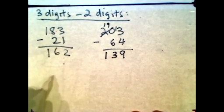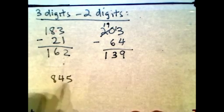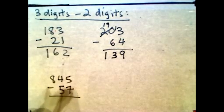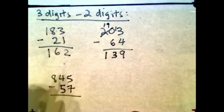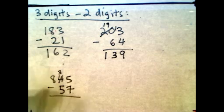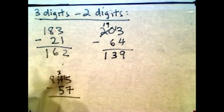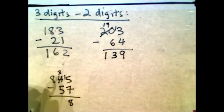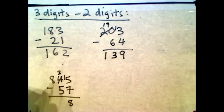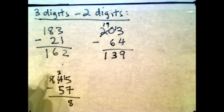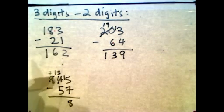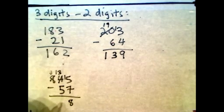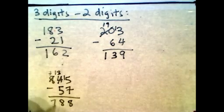Let's say you have 845 minus 57. The 5 is smaller than 7, so we need to borrow from the 4 tens, which becomes 3. That gives us 15 in the ones column. 15 minus 7 is 8. Now 3 minus 5 — again, 5 is too big, so we borrow from the 8 hundreds, making it 7 hundreds. Now that column is 13. 13 minus 5 gives you 8. Then bring down the 7. The answer is 788.